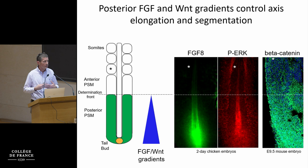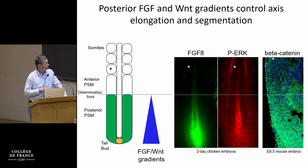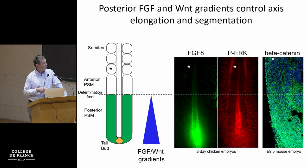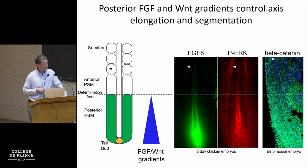The clock is thought to define the rhythm of somite formation — the temporal component of the system. But you need a second component, a spacing component called the wavefront, which work from my lab, from Takeda's lab in Japan, and others showed involves a system of posterior gradients involving FGF and Wnt signaling. This gradient establishes a threshold along the presomitic mesoderm that defines the level at which cells can start to respond to the periodic signal of the clock.